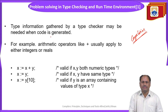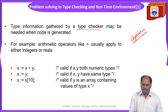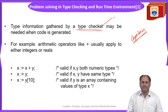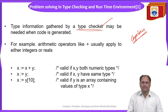Some of the information gathered by the type checker — this type checking process is an important one in the phase of compiler design. Syntax and semantics are to be checked clearly before the code is generated. Before generation of the code, it is to be verified by the type checker, whether it is following the structure of the corresponding language or is defined correctly.